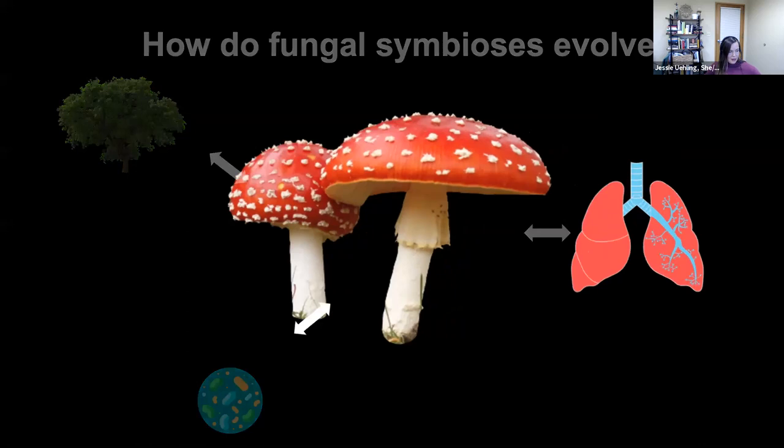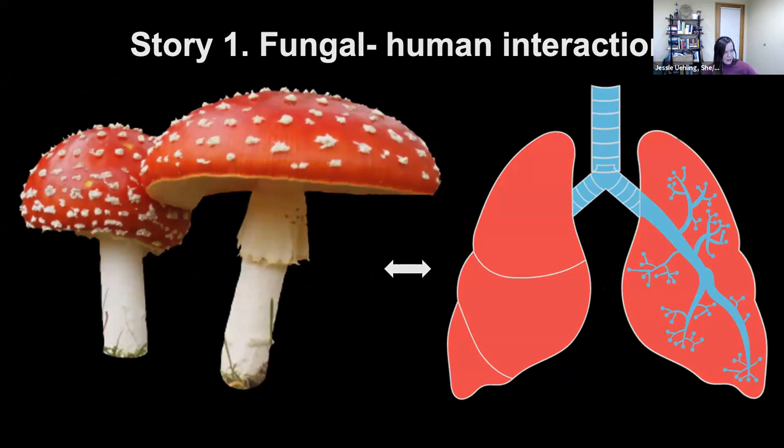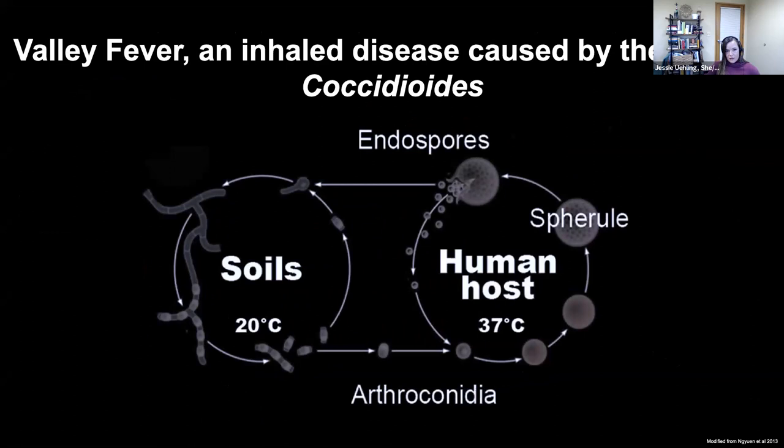Story one is about human-fungal interactions, and really the focus is on the disease valley fever. Valley fever is caused by a fungus in the genus Coccidioides. It is a disease that people get when they breathe in spores from desert soils. The fungus has several phases — it's growing as a filament in the soils and producing these arthroconidia, or asexual spores.